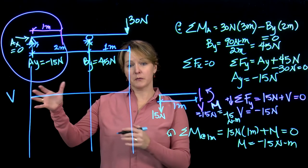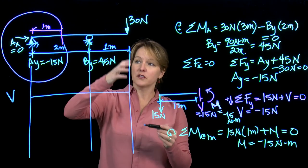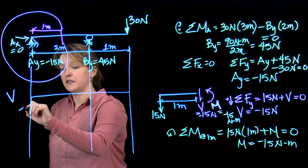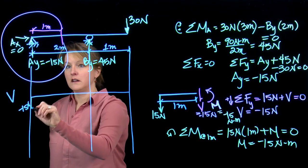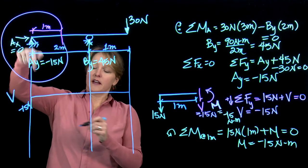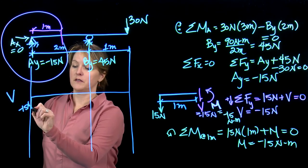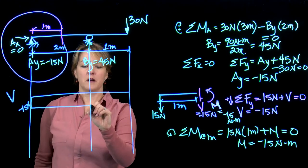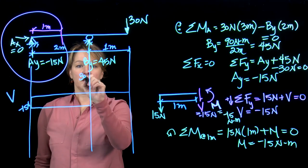Let's first look at the shear diagram. What this is is a representation of how the internal force is varying along the length of the beam. I'm going to go down by 15, that's showing I have this negative support reaction. There's nothing happening, no load, so I just go horizontally, then I come up by 45, which gets me to 30 newtons.